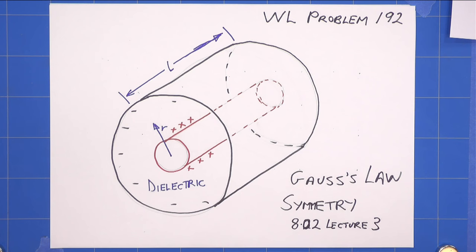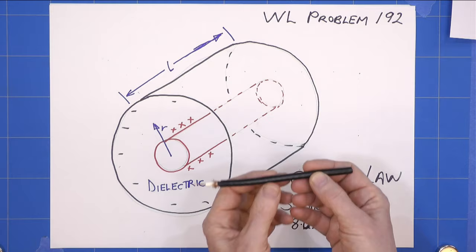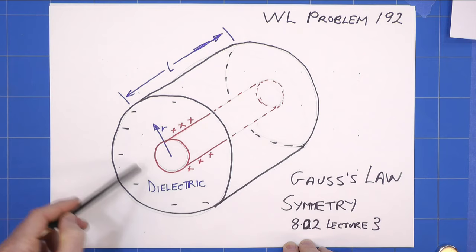This is Keith's solution to Walter Lewin's problem 192 concerning a piece of coaxial cable. I've done an enlarged view of a section through it.